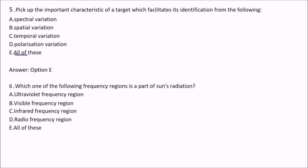Next question: which one of the following frequency regions is part of the sun's radiation? Is it ultraviolet, visible, infrared, or radio? The answer is E — all of these. Don't be tempted to answer only the visible frequency region, because the sun also gives ultraviolet, infrared, and radio frequency radiation. All of these are part of the sun's radiation.